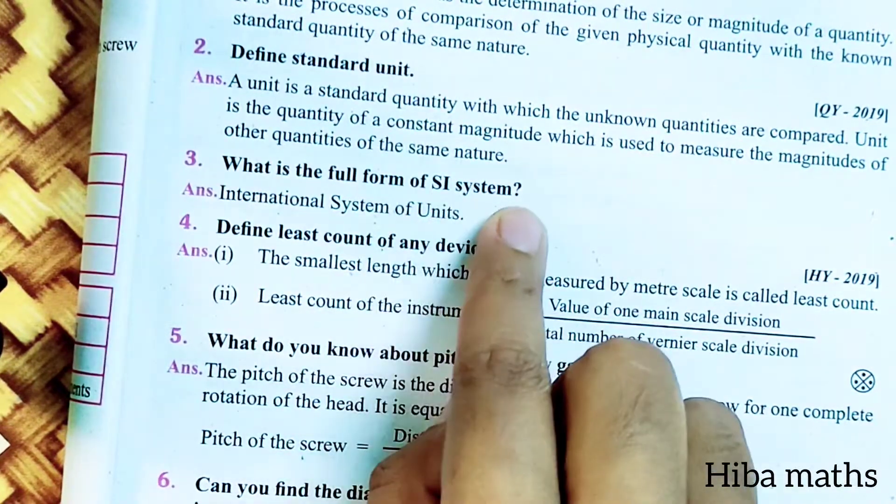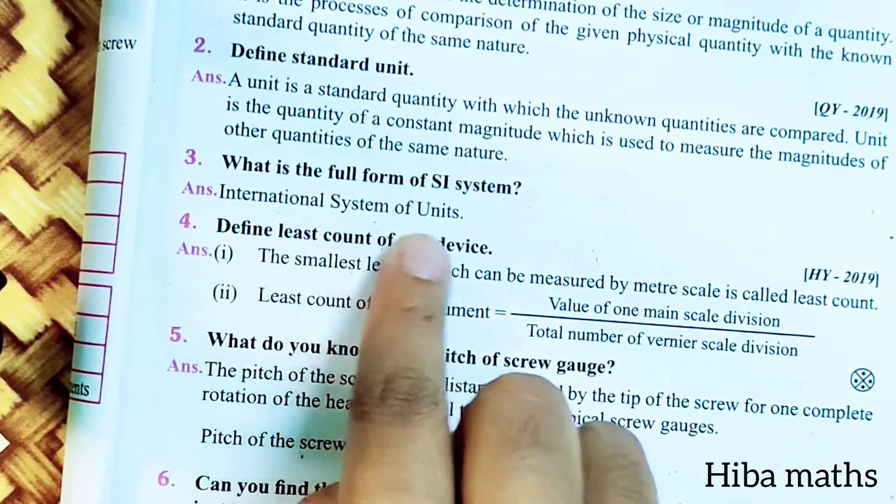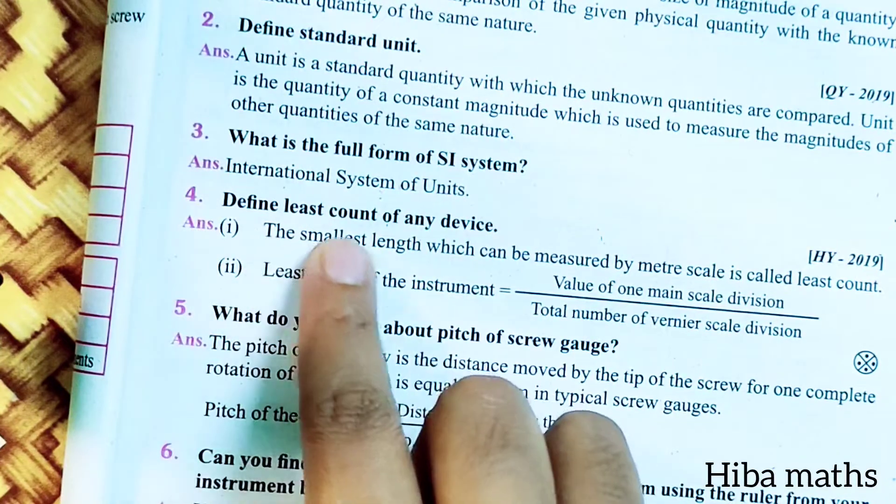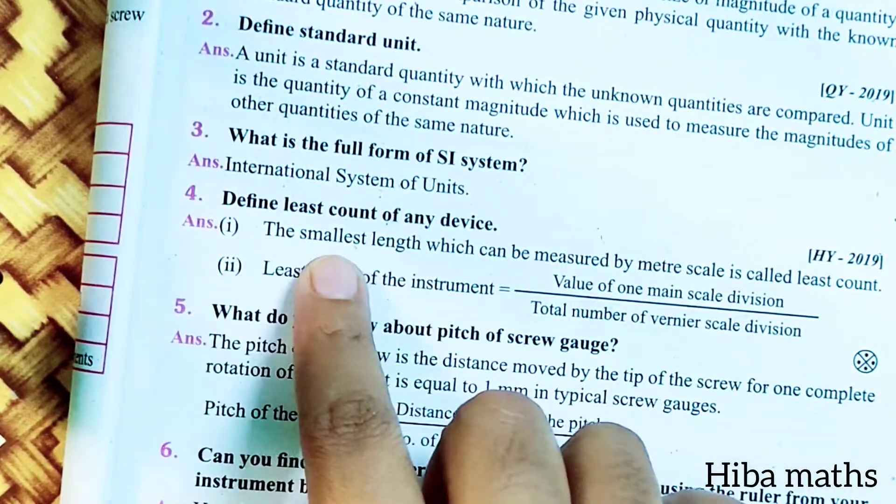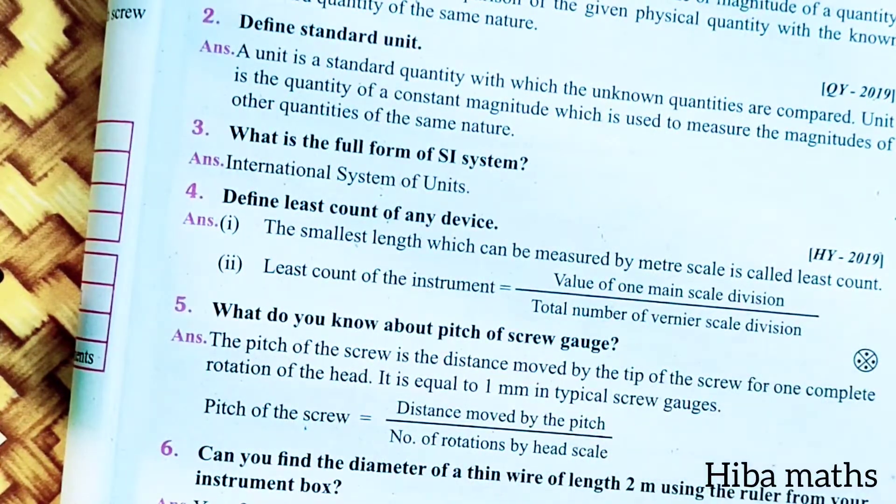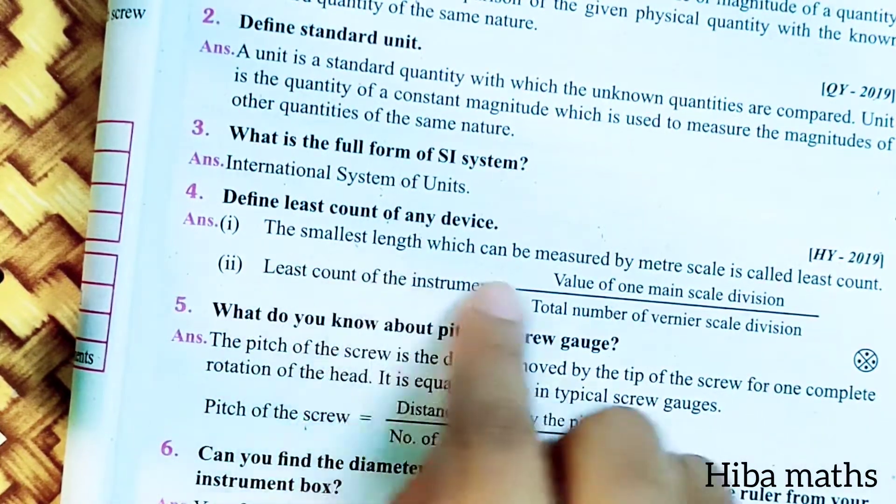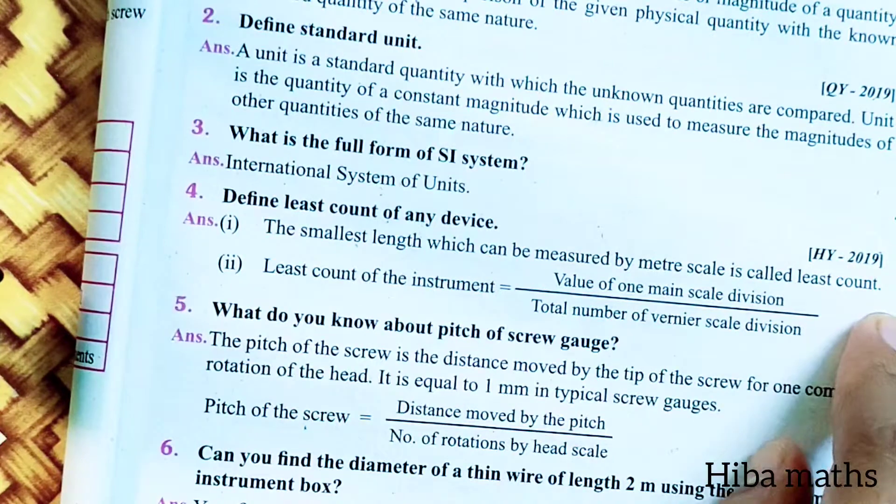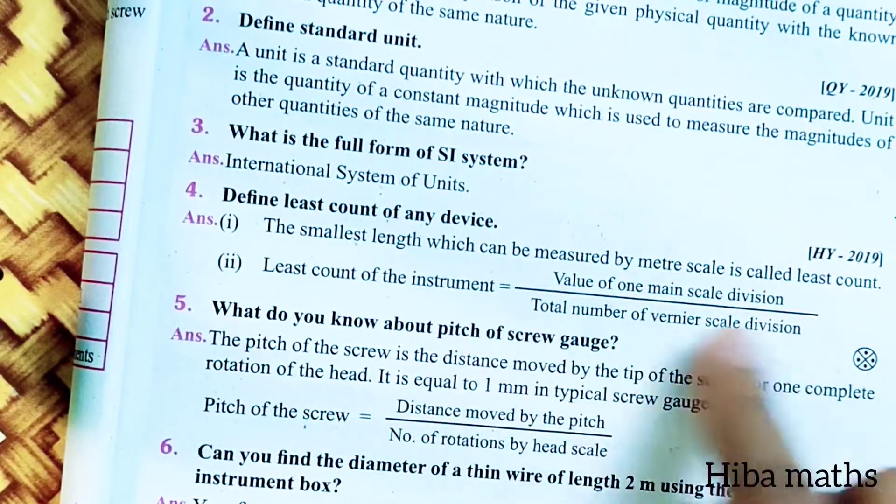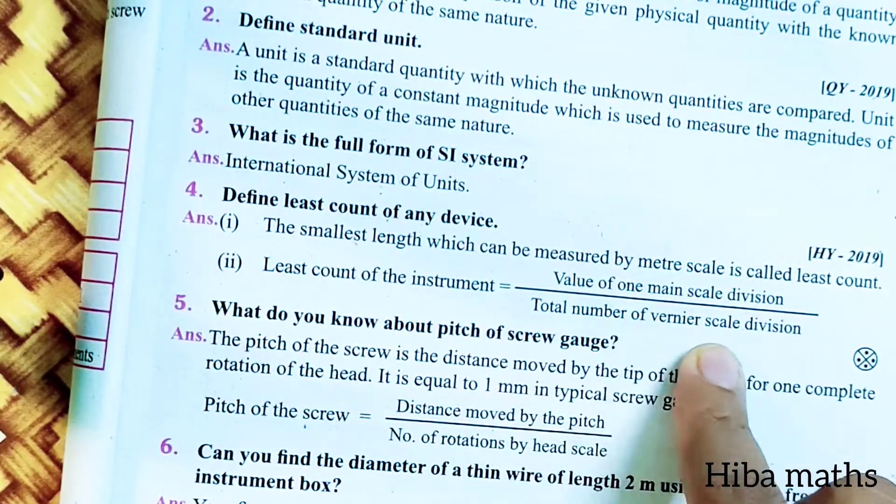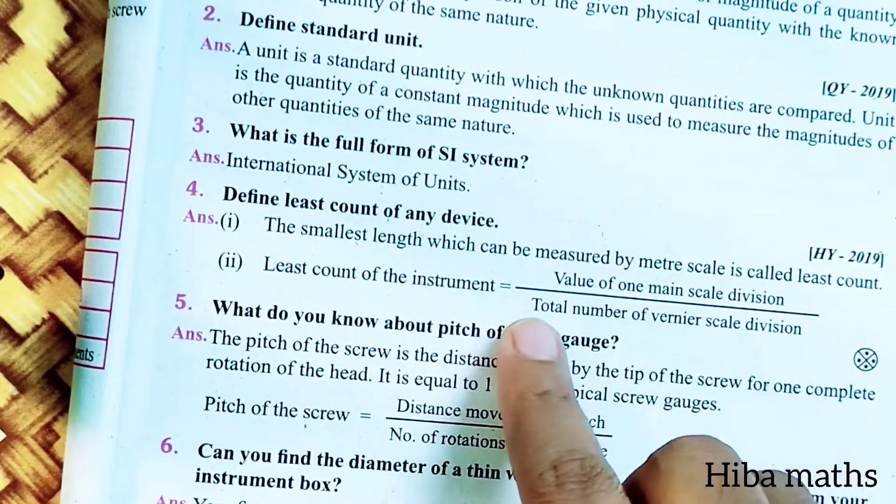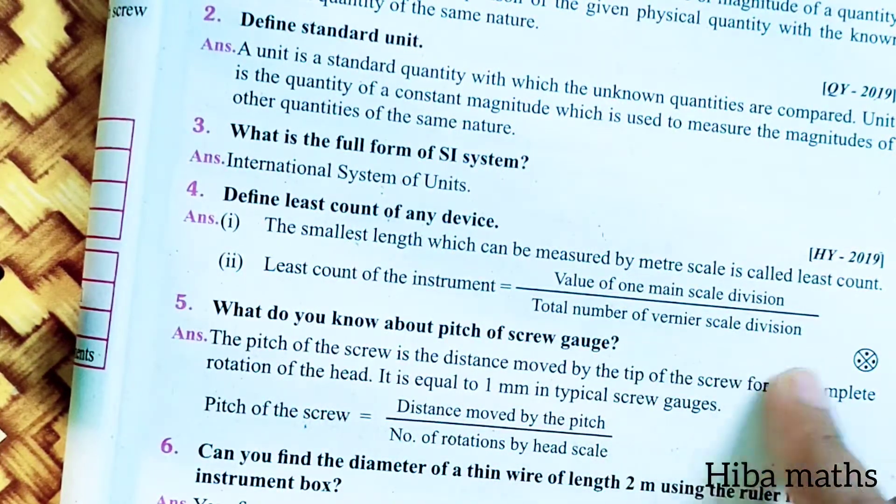What is the full form of SI system? International System of Units. Define least count of any device: The smallest length which can be measured by the meter scale is called least count. Least count of the instrument equals value of one main scale division divided by total number of vernier scale division.